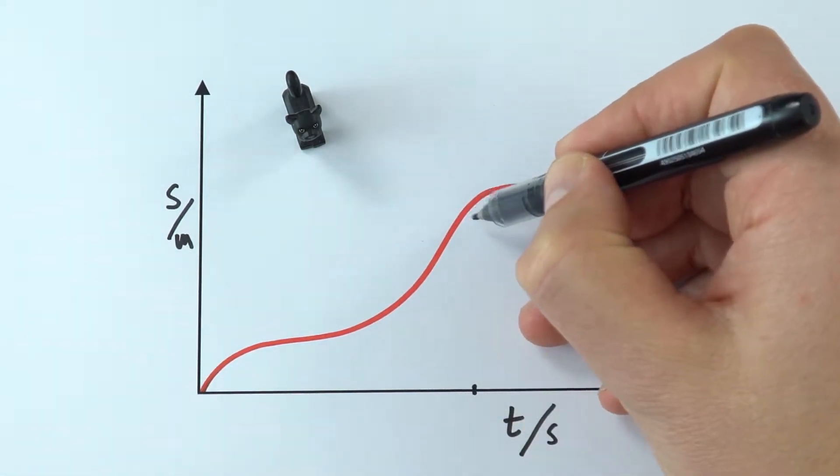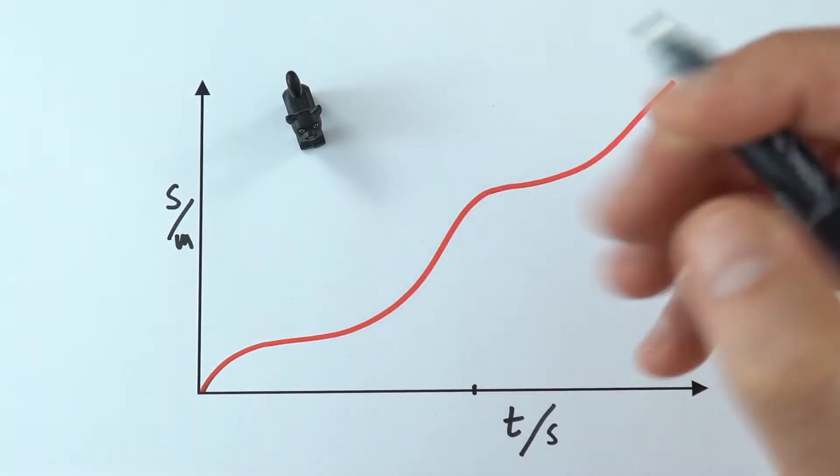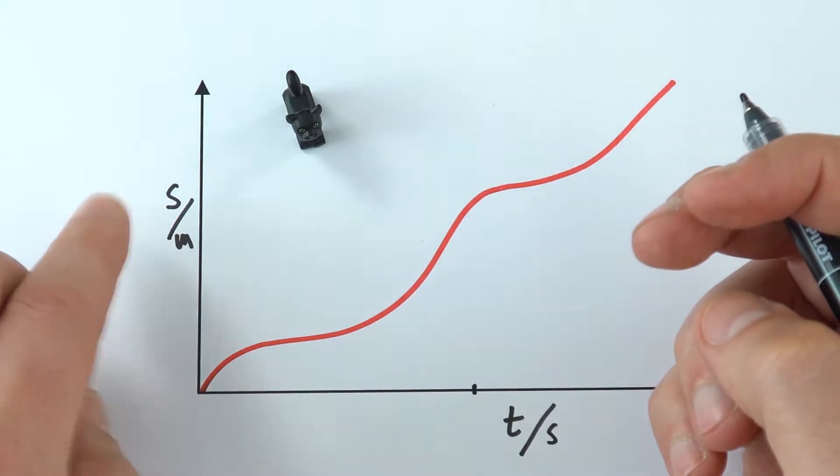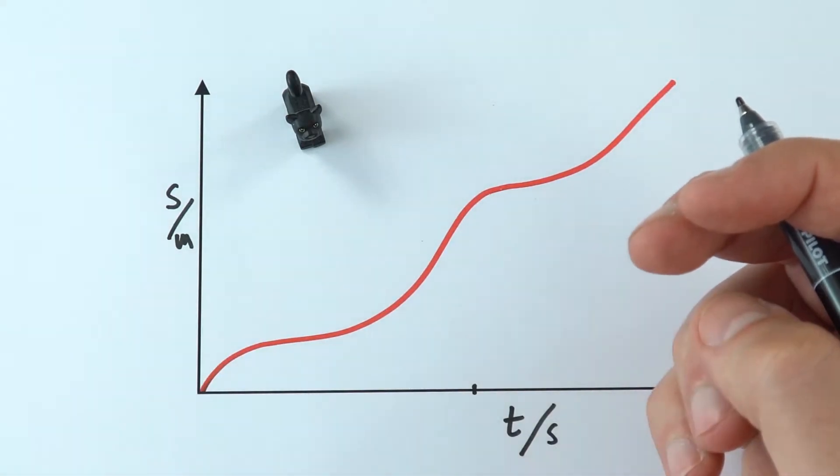Well, the speed is still going to be equal to the gradient of that line. Remembering, of course, that the gradient or the slope of that line tells us the rate at which the distance is changing per second, therefore it's speed.